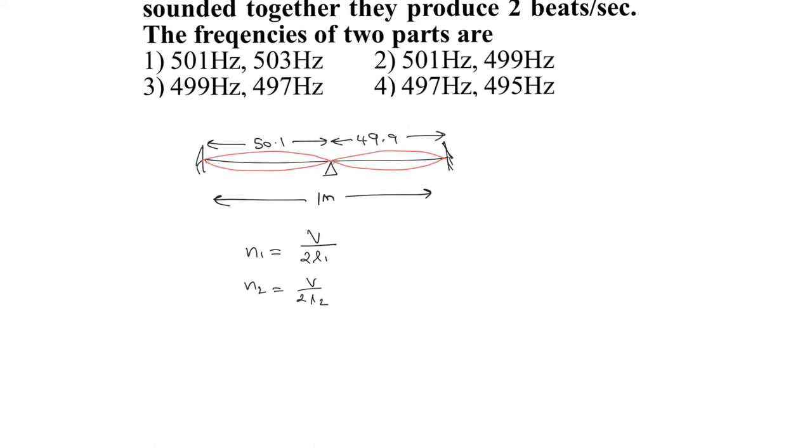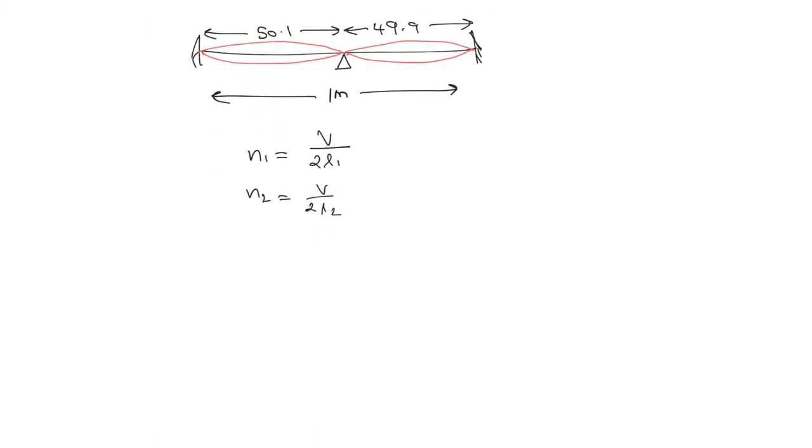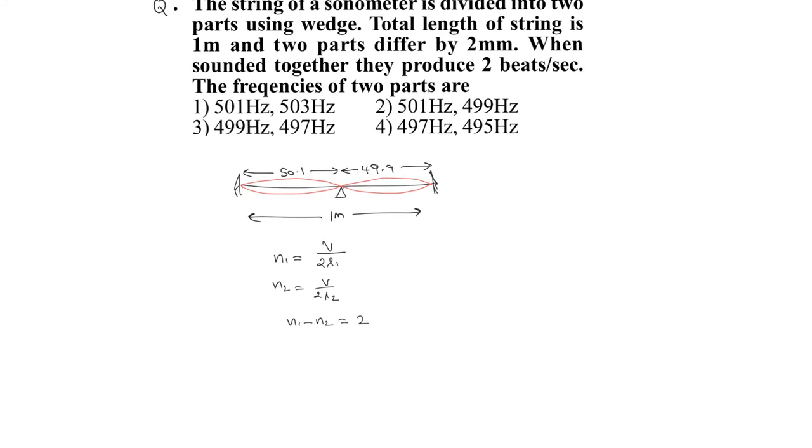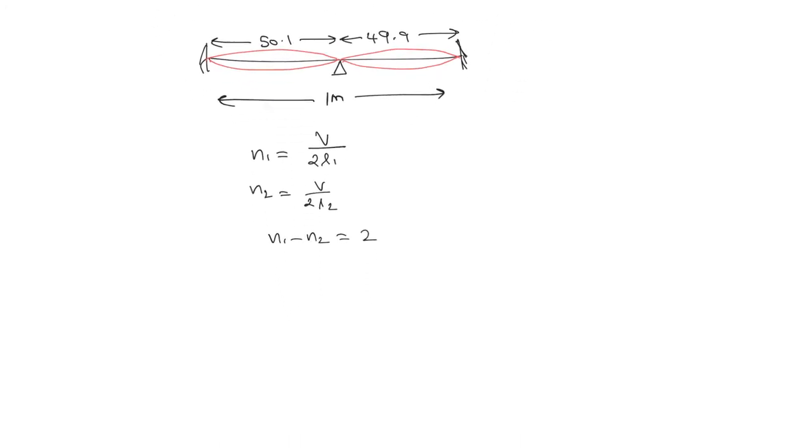The difference in frequency is given as 2. So ν₁ - ν₂ = 2. From this, we can find the frequencies of these two parts.